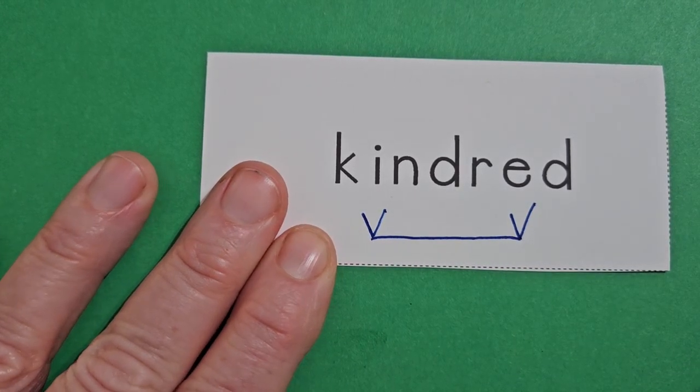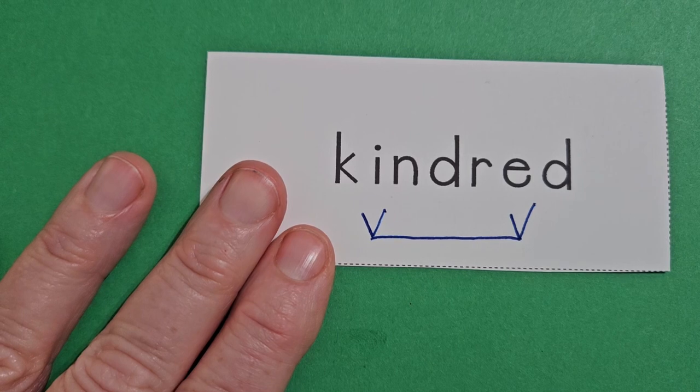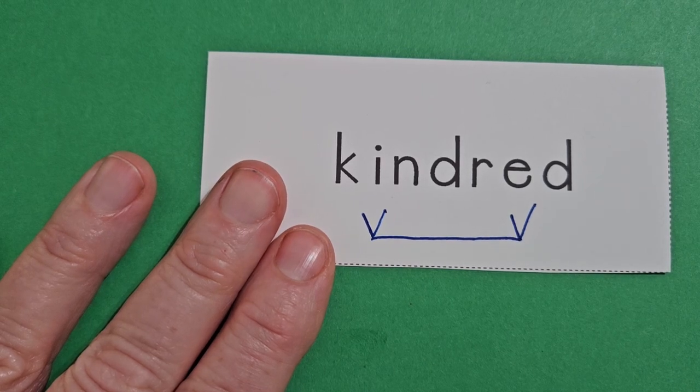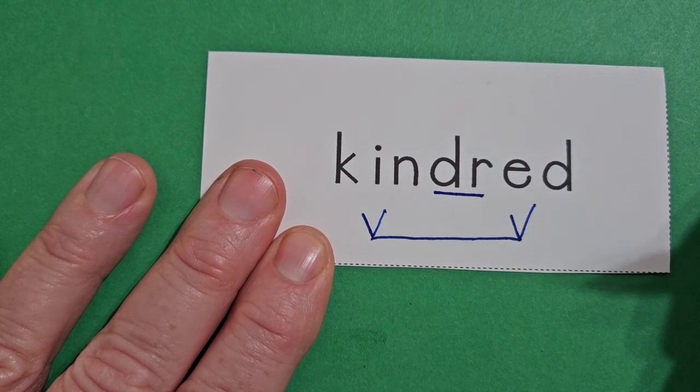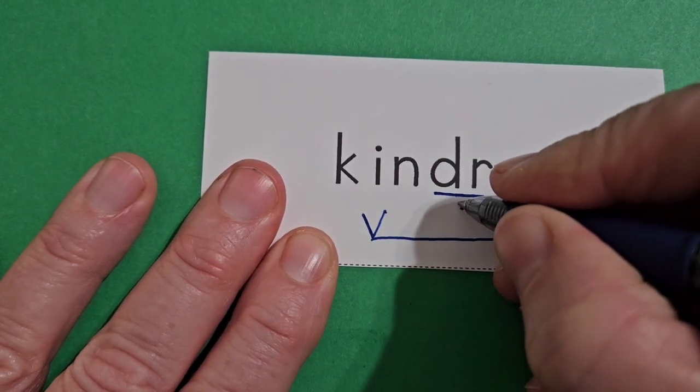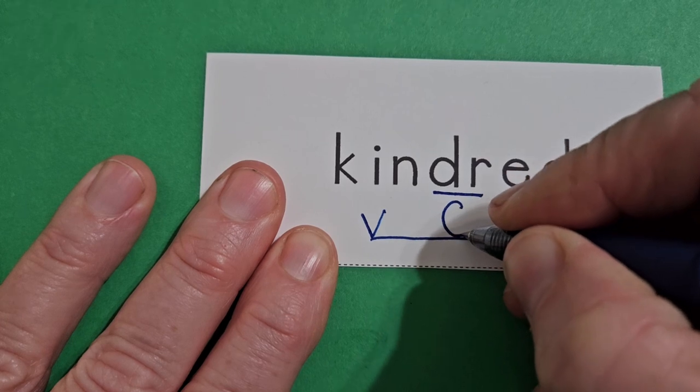Again, we have three consonants, but I can only put two C's on there. So I know the DR will go together. I underline the DR, and then I put a C for consonant under there. The N is my other consonant.